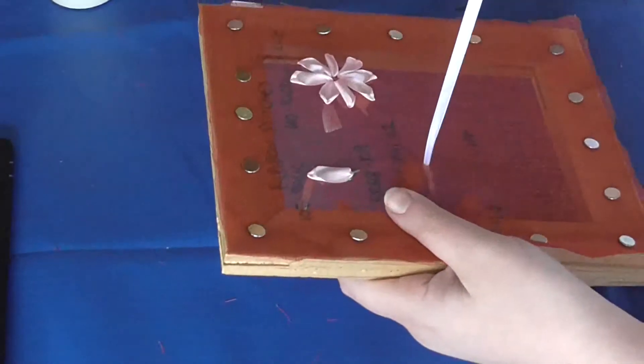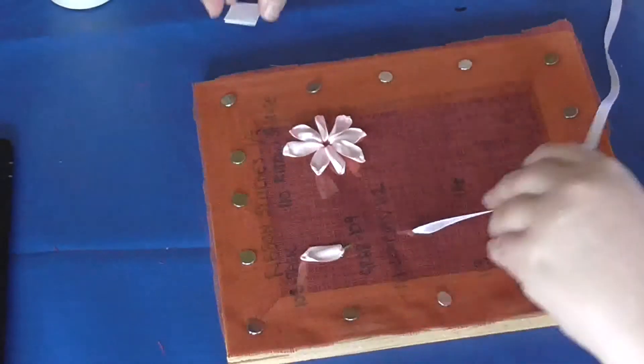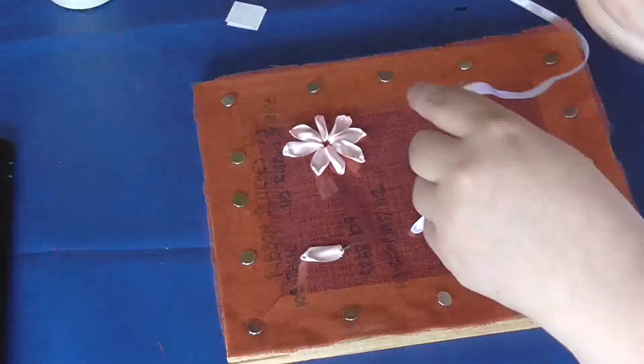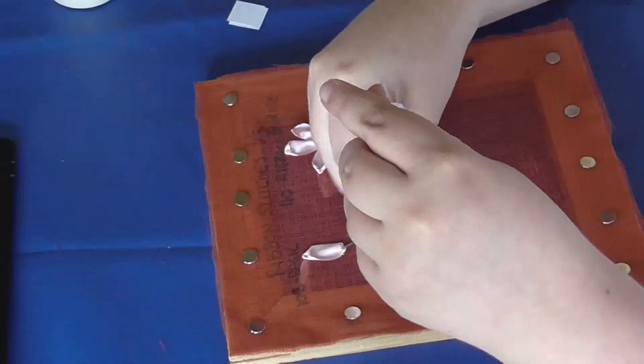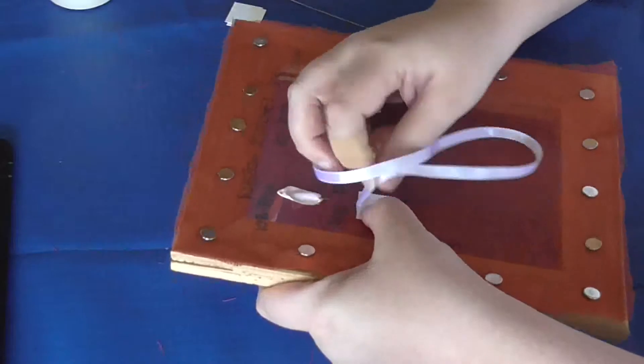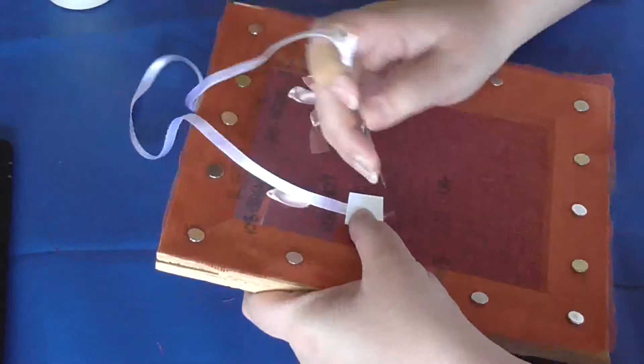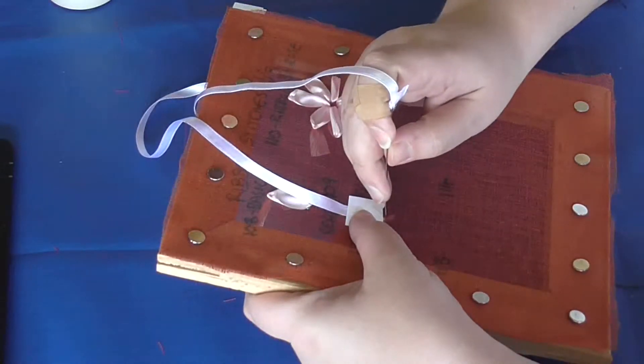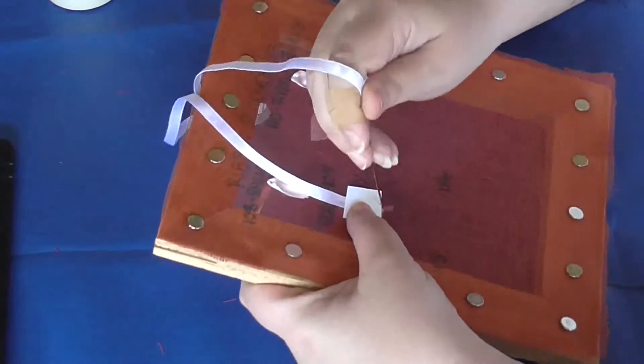So, stitching through and then using one of my template pieces, I'm going to lay that on top of the ribbon like that and then stitch back right below the original exit stitch there.